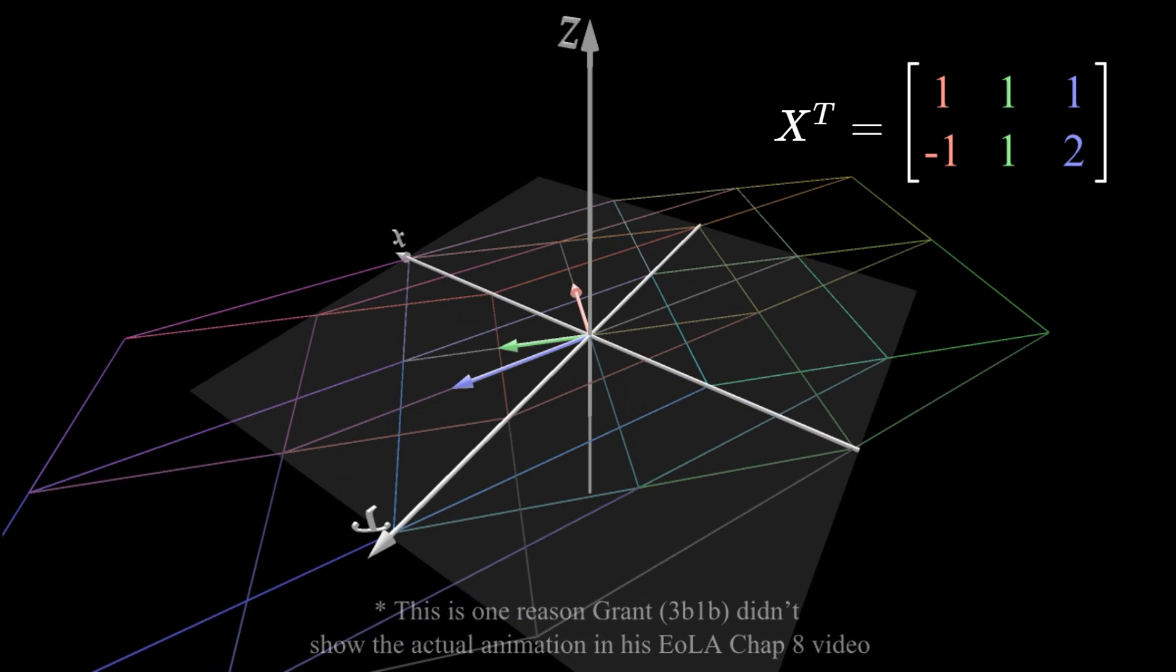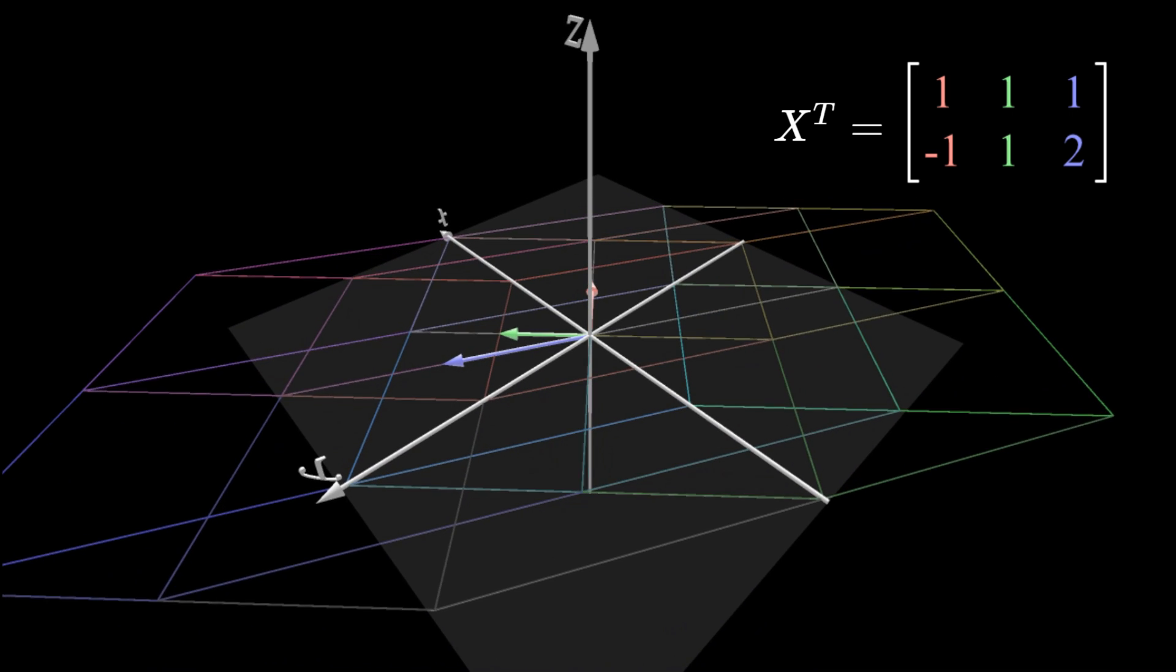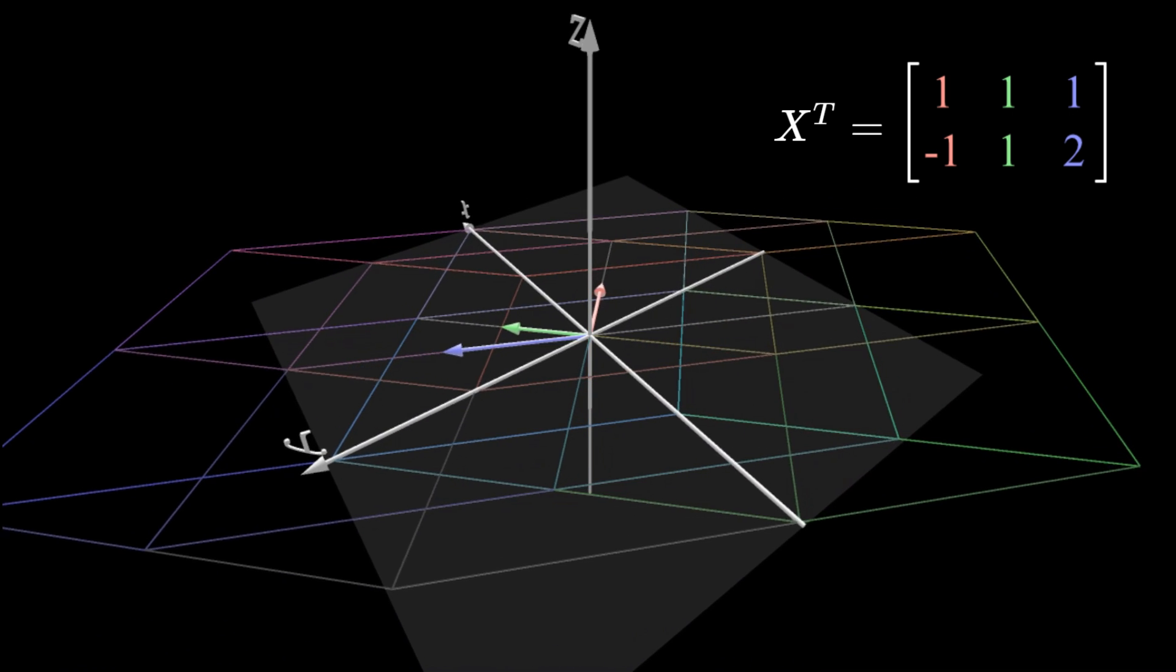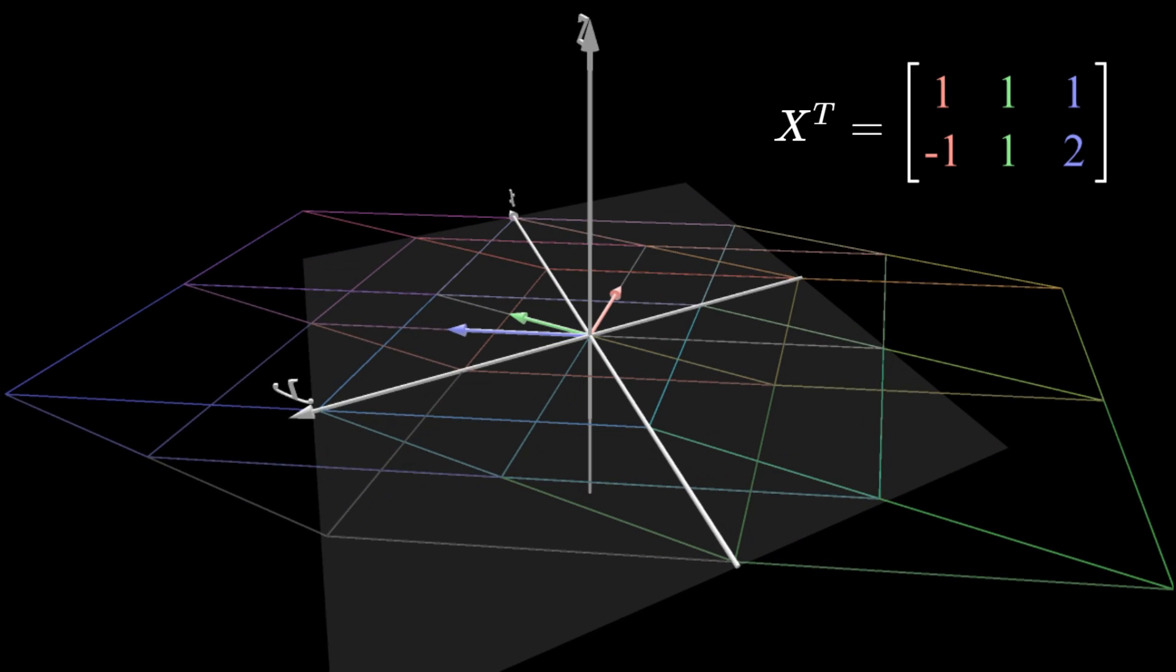However, please remember that those transformed vectors are inherently 2D creatures. They live in a completely different space, the 2D space, with only two numbers describing their positions.